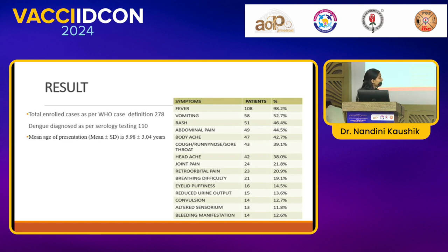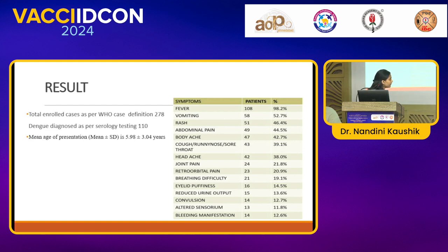The examiner asked whether every URI should be investigated for dengue. The candidate clarified that they investigated those individuals because they presented during the seasonal trend of dengue infection.